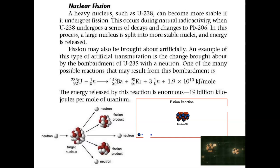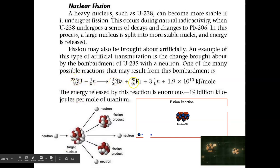Let's continue our discussion of nuclear chemistry. Last time we reviewed nuclear fission, and nuclear fission is an example of artificial transmutation. Transmutation is when an unstable nucleus becomes something else more stable.